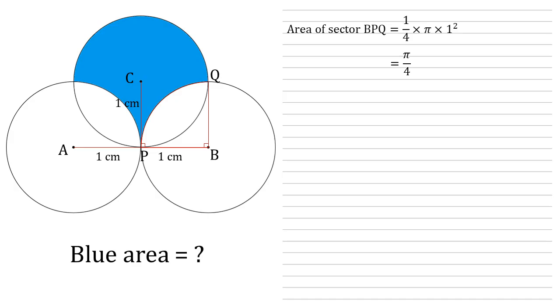If we add in the straight line from P to Q as such, we can see we've created a right angle triangle BPQ. We can work out the area of this nice and easily because it's got a base of one centimetre. It's got a height, which is also a radius, so also one centimetre. So the area of that triangle is going to be a half times one times one, which is a half.